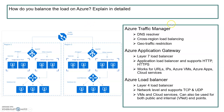Azure Traffic Manager is usually used for cross-region load balancing. For example, if you have region 1 and region 2 with a similar setup and want to manage traffic between these two regions, you can use Azure Traffic Manager. It works on DNS resolution and cross-region load balancing. Geographic restriction is also available with Azure Traffic Manager.